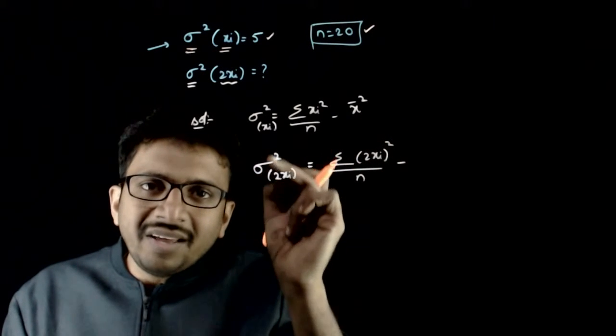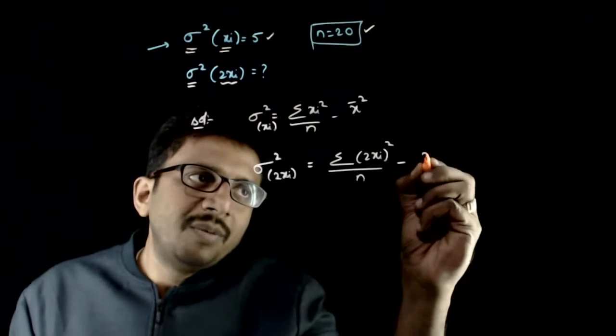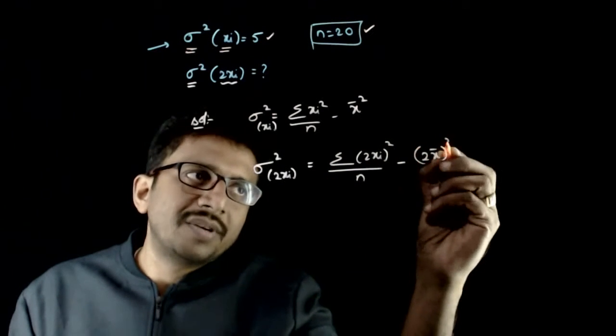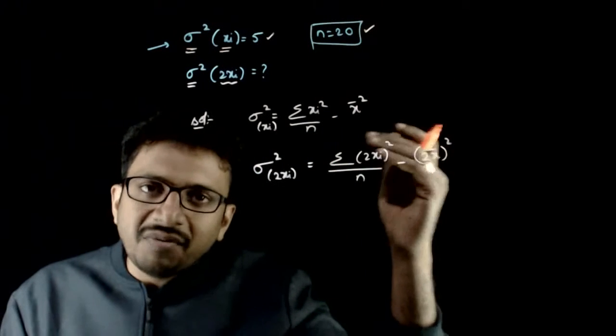If every reading is doubled, we know that the mean will also get doubled. So the mean will become 2x bar whole square. If each of the reading is doubled, obviously the mean will be doubled.